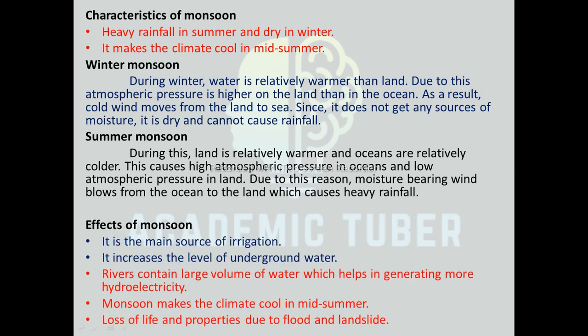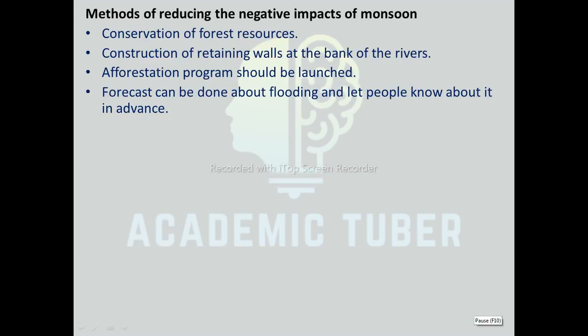Effects of monsoon: It is a major source of irrigation. It increases the level of underground water. Rivers contain large volumes of water which helps in generating more hydroelectricity. Monsoon makes the climate cool in mid-summer. However, there is loss of life and property due to flood and landslide. Methods of reducing the negative impact of monsoon include: conservation of forest resources, construction of retaining walls at the banks of rivers, launching afforestation programs, and forecasting floods in advance to inform people.